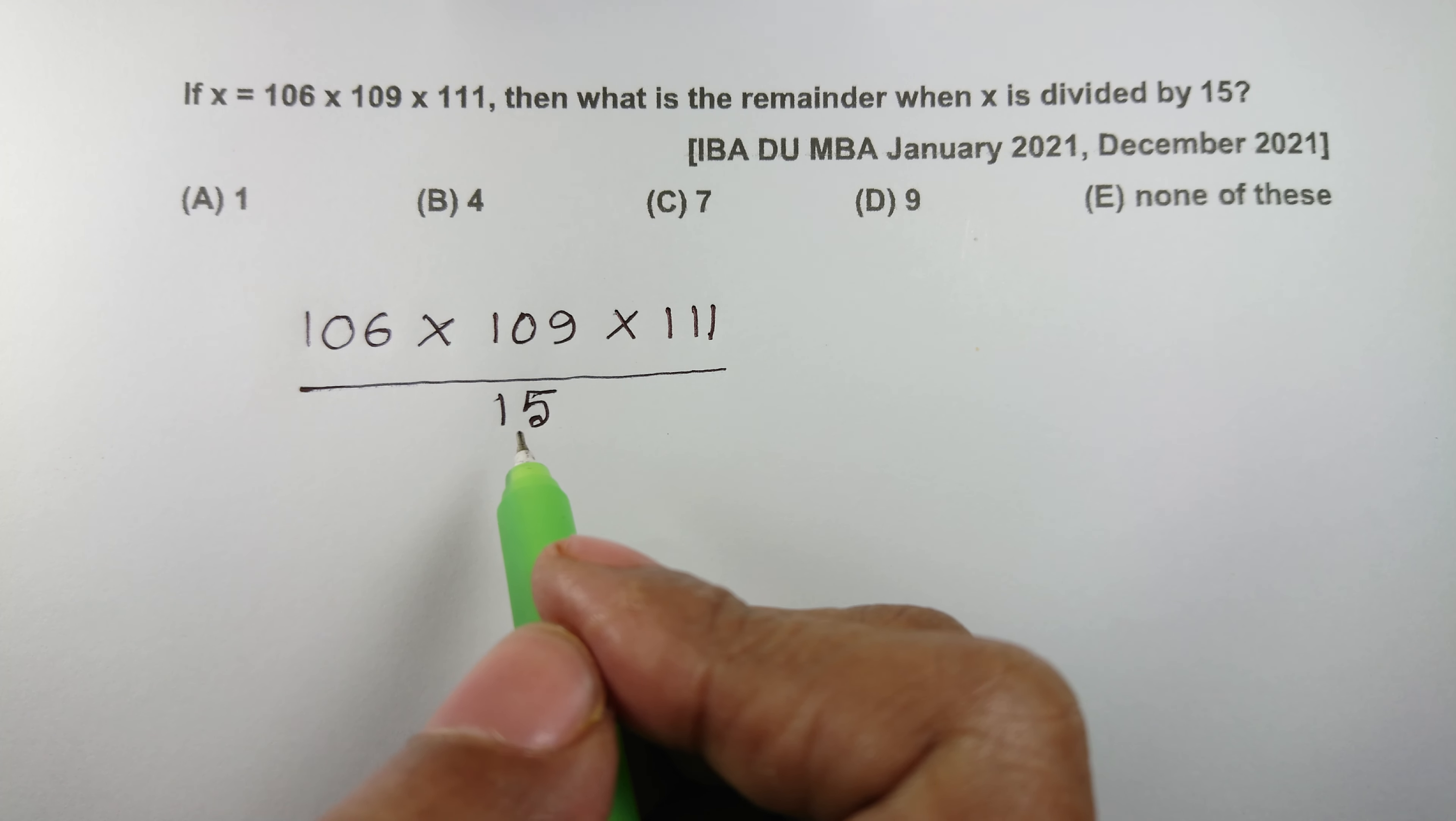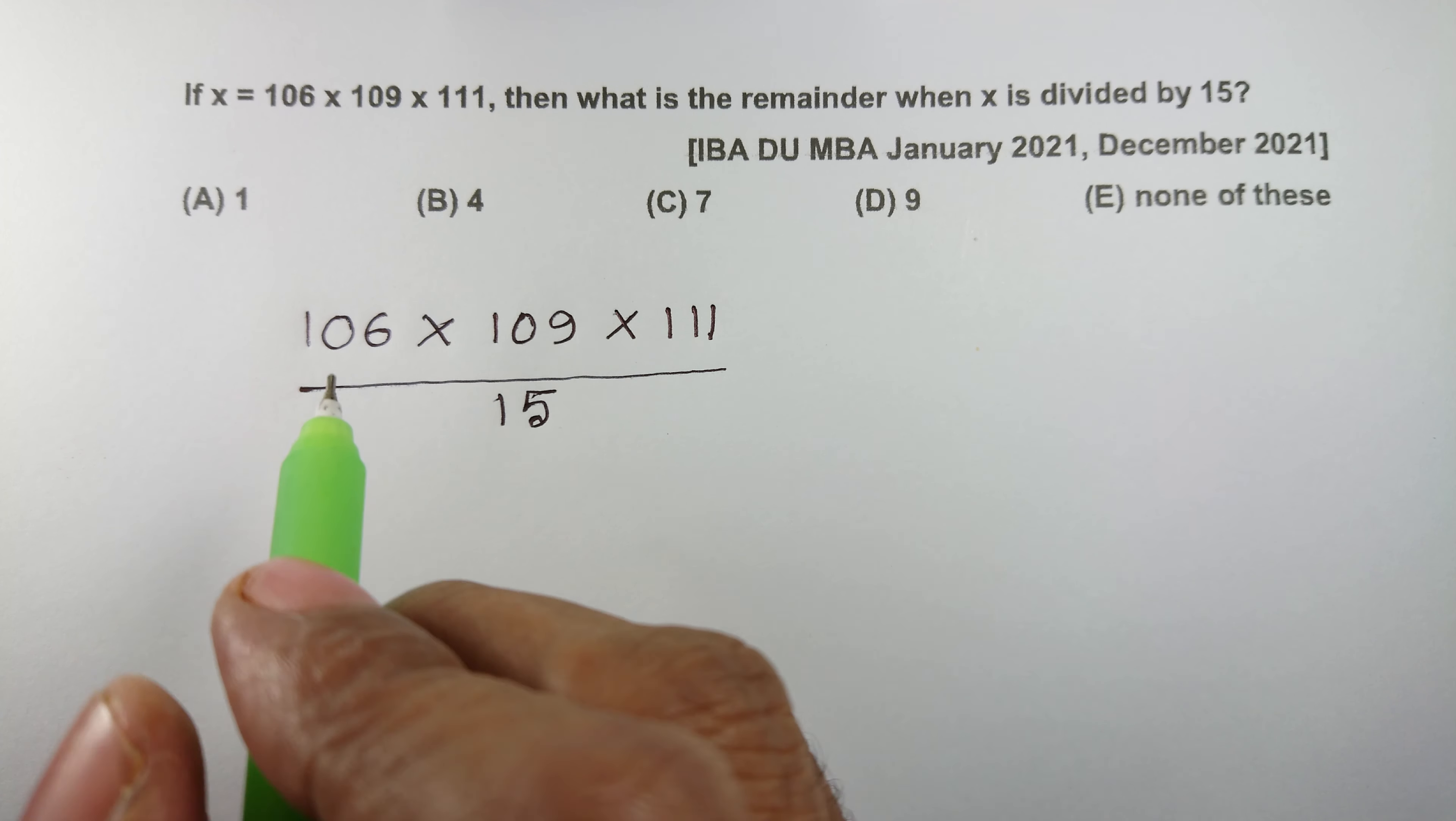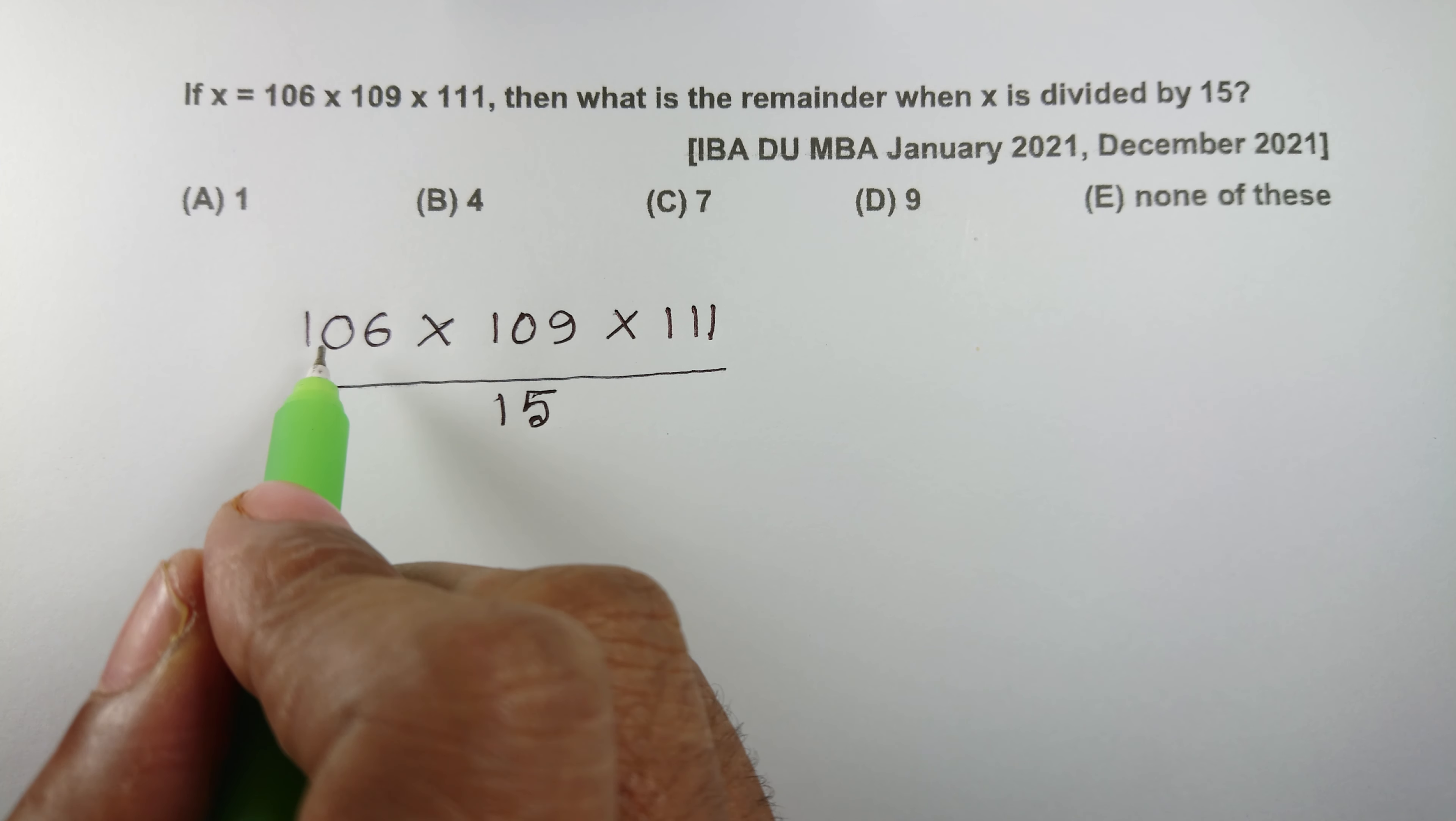કરી 15 થી ડિવાઇડ, 15 થી અલગ અલગ ડિવાઇડ કરીએ. 15 એ 7 ટાઇમ્સ છે 105, તારે 106 ને 15 થી ડિવાઇડ કરીએ રિમાઇન્ડર આવશે 1